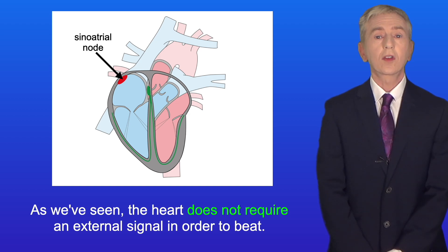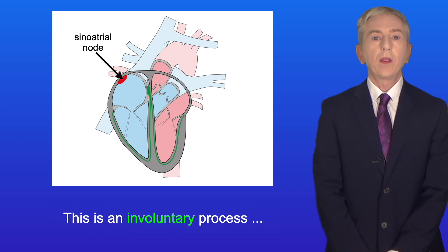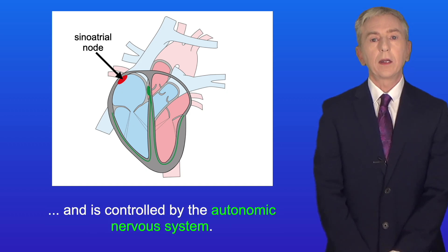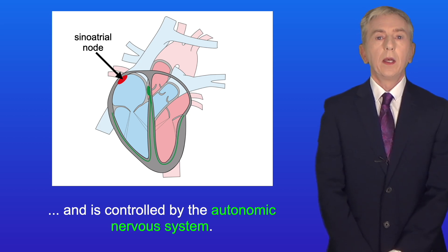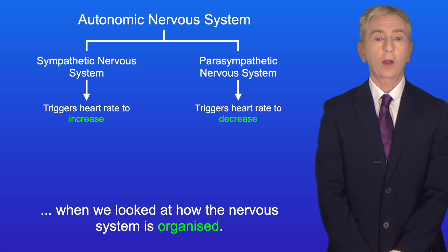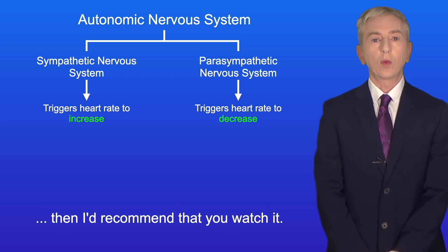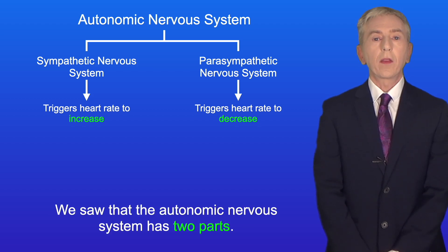The heart does not require an external signal in order to beat. However, the rate that the heart beats can vary depending on the conditions. This is an involuntary process and is controlled by the autonomic nervous system. The autonomic nervous system has two parts.